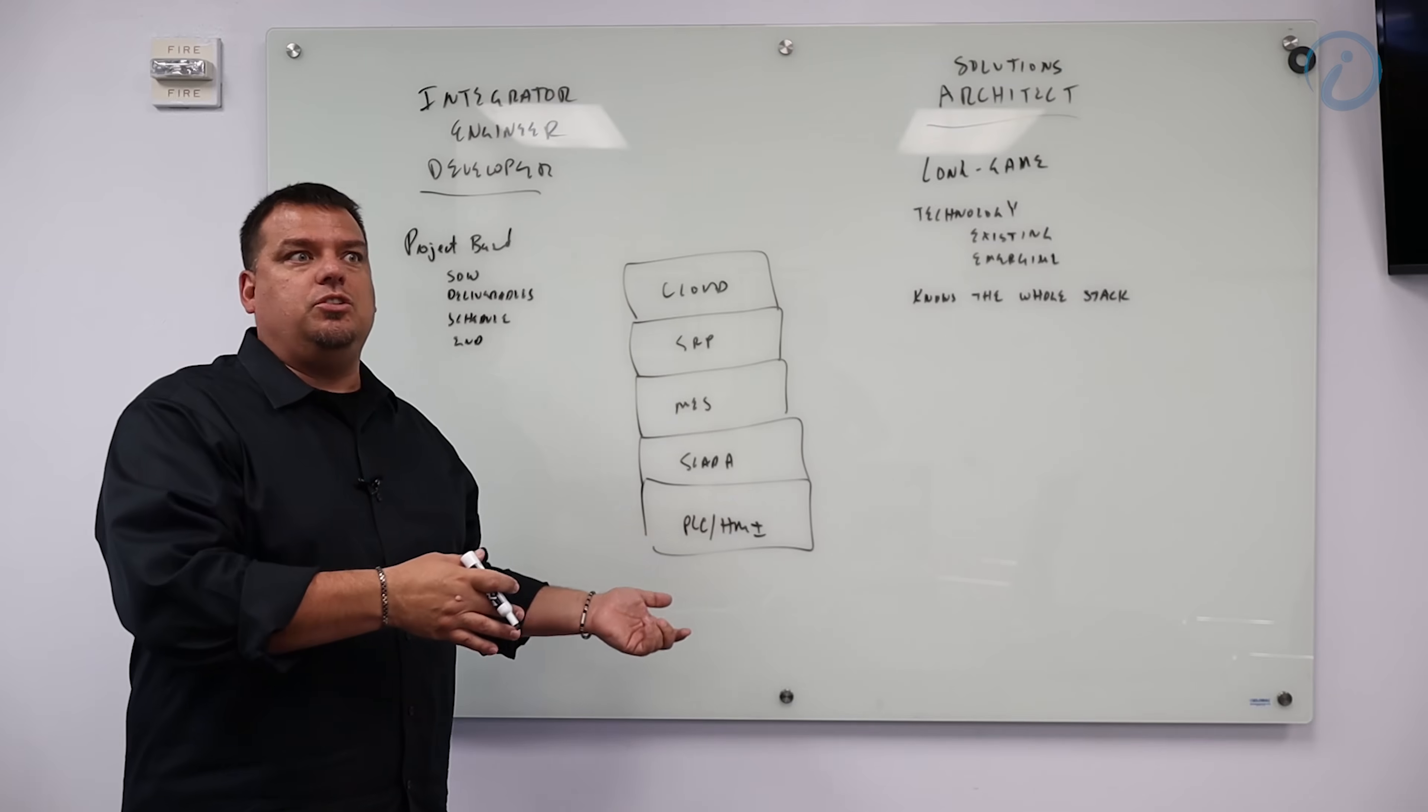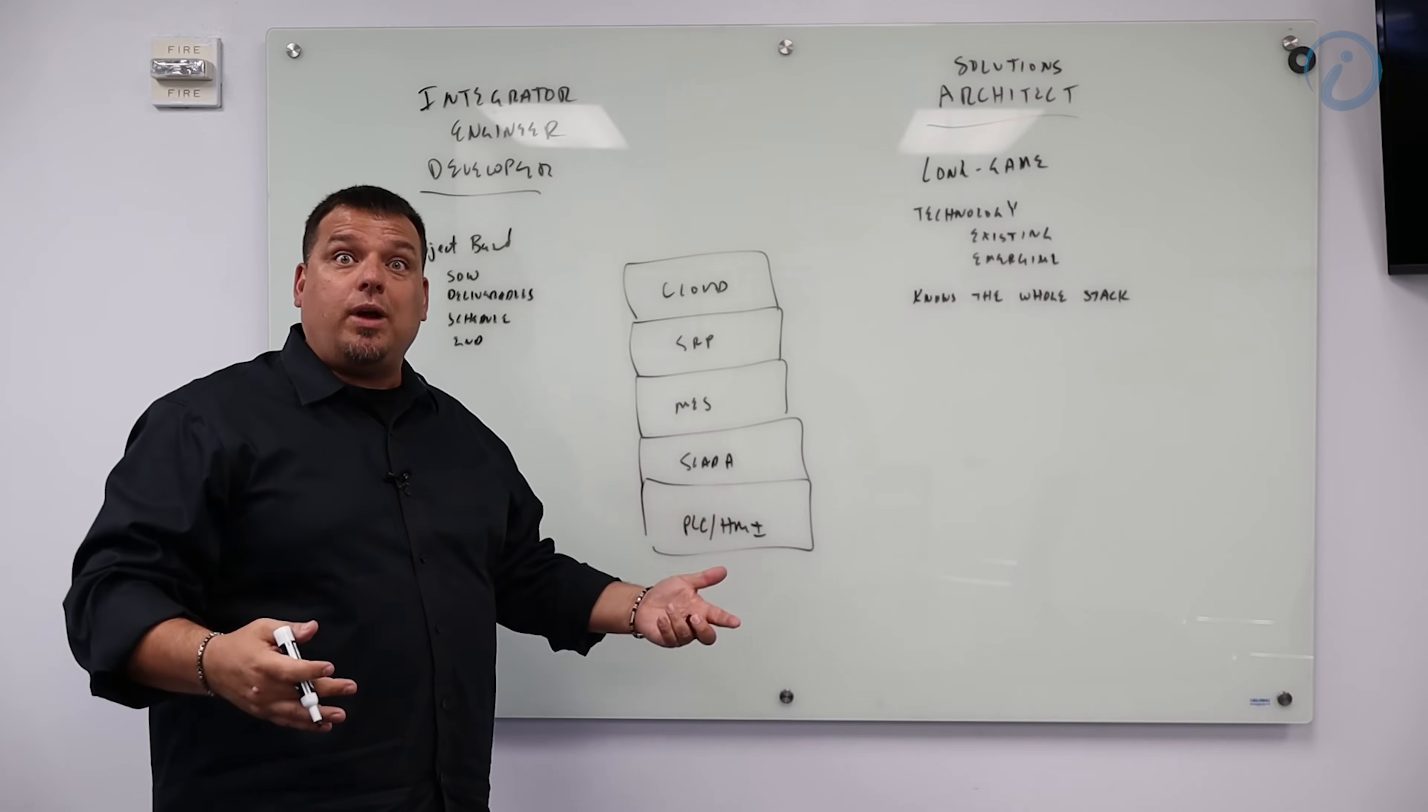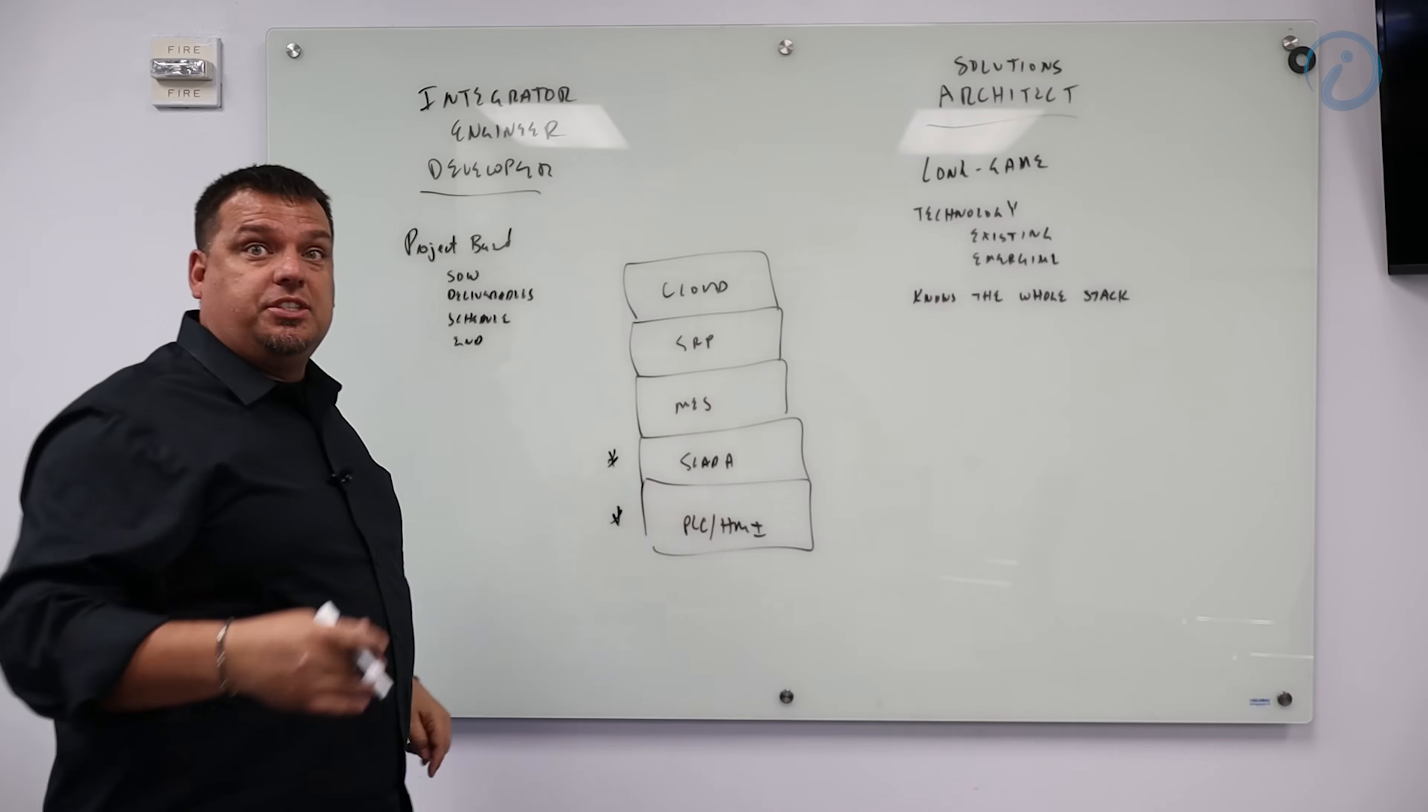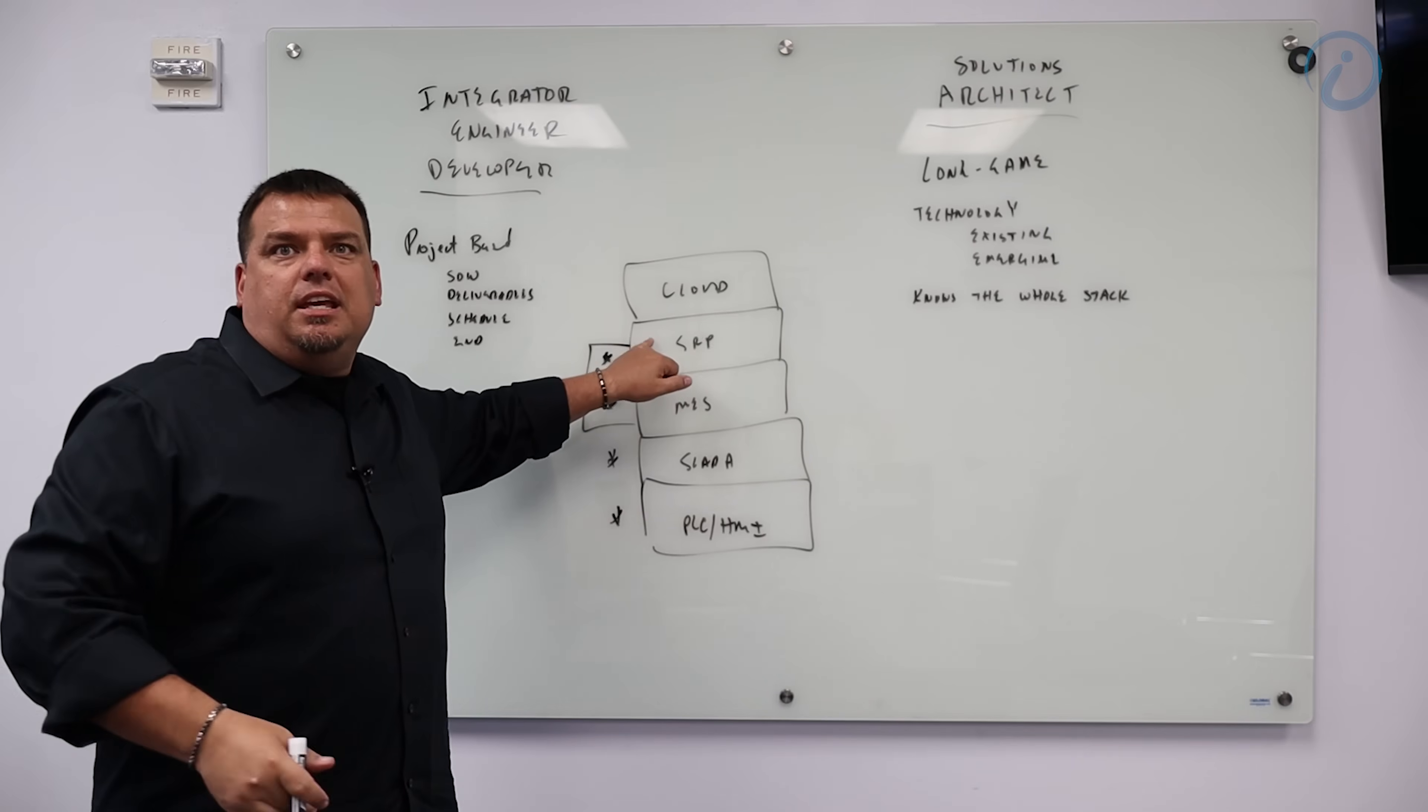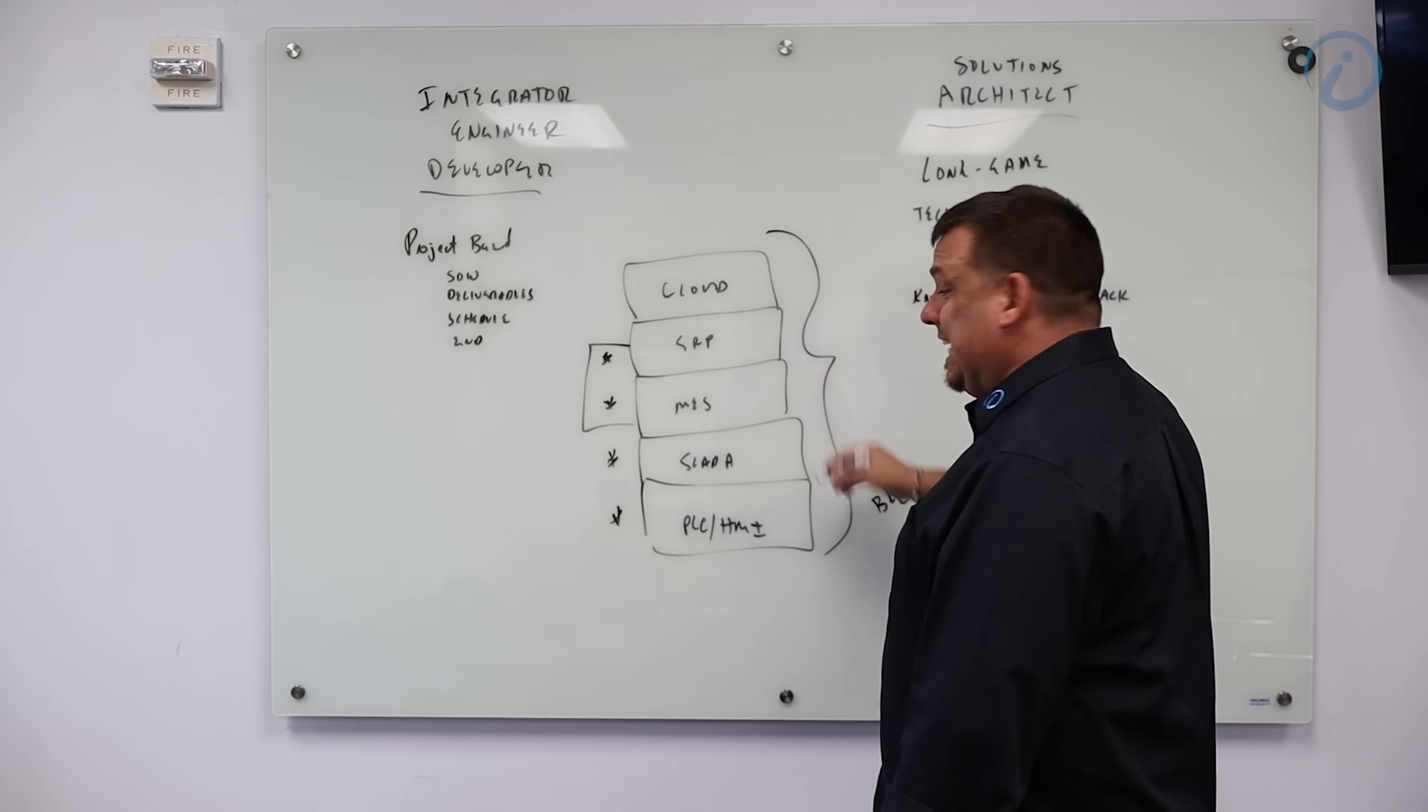They may only use Studio 5000 and ladder logic, they may only develop in Easy Builder Designer Pro, they may be an automation direct developer, they may only use Red Lion HMIs or Maple Systems HMIs. But on the SCADA side, they may specialize in Aviva Wonderware, they may specialize in Factory Talk. The integrator engineer developer specializes in one or two of these layers. Go to a systems integrator, they're going to have a business intelligence person. That business intelligence person is really only going to know these two pieces, and if they know those two pieces, they're only going to know SAP and Wonderware MES or Factory Talk MES. So they're not going to know everything.